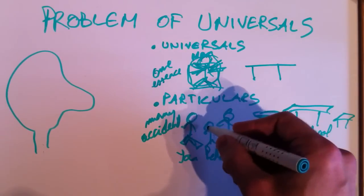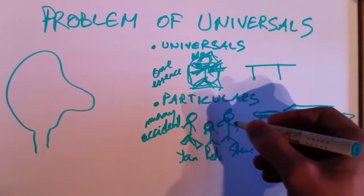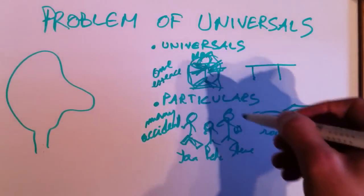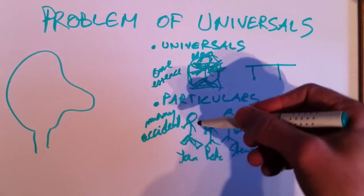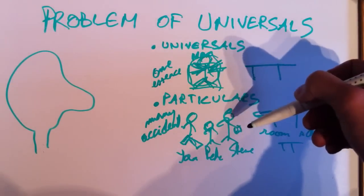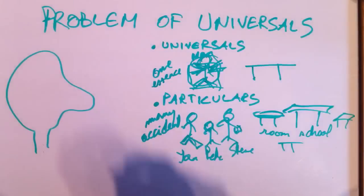And Pete, Pete has no hair, he's bald. And Steve, Steve lacks a finger here. So these are accidental characteristics and it's not necessary that man lacks a finger. It's not part of the essence of man to lack a finger.